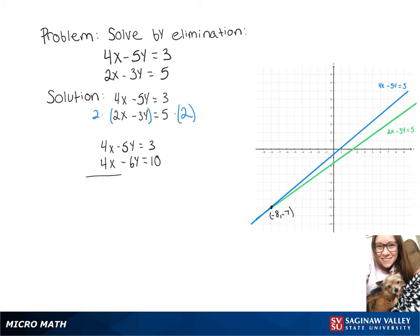Then we can subtract our second equation from our first equation, which cancels out our x's and leaves us with y equals negative 7. So let's take that y value,